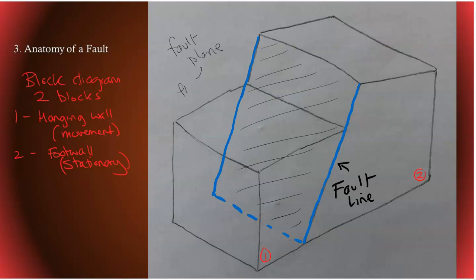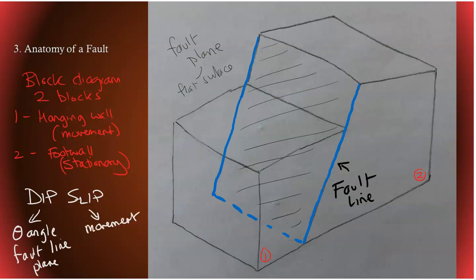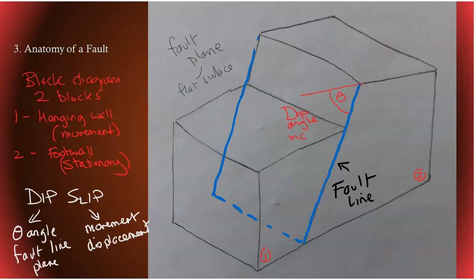Now in terms of this type, this would be a dip slip. And in terms of definition, dip would be the angle of the fault line or the fault plane. And the slip would be the movements or the displacement. The angle right here, this would be our dip angle, also called the inclination and also called the plunge.